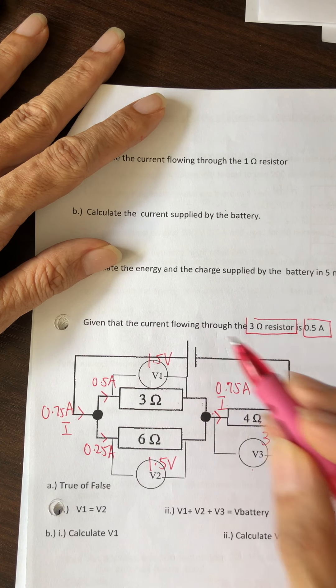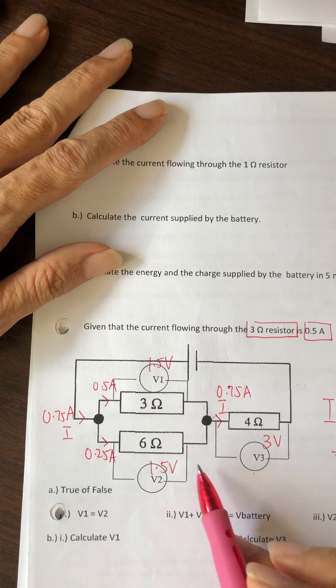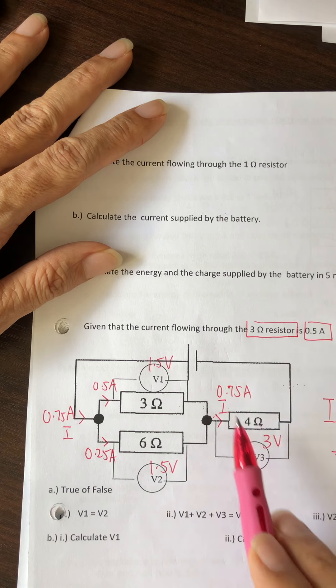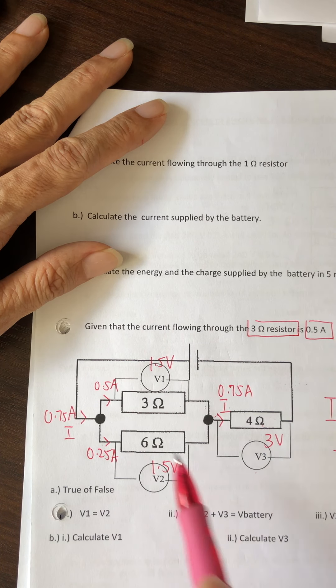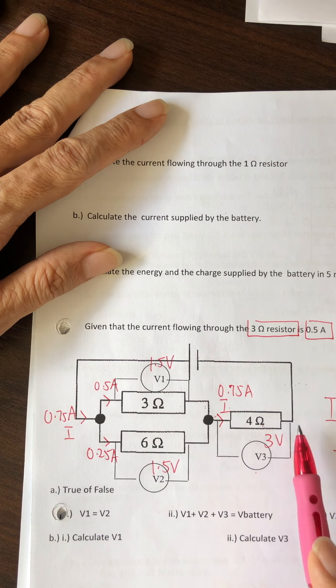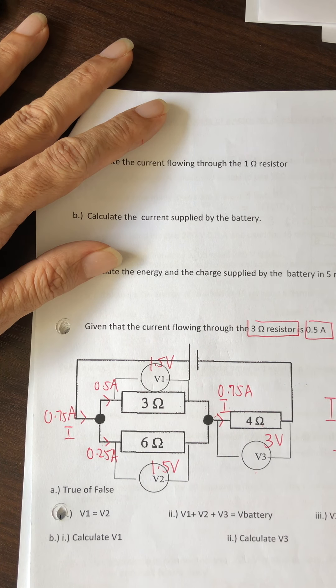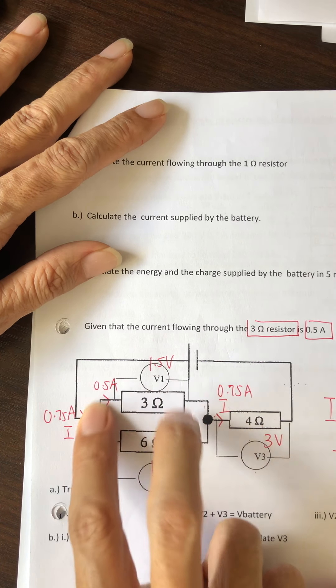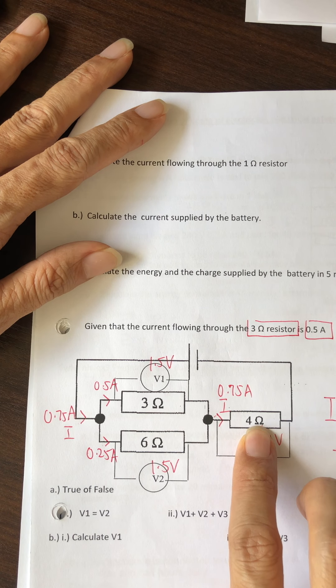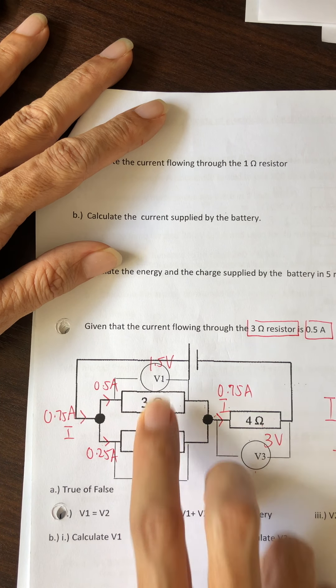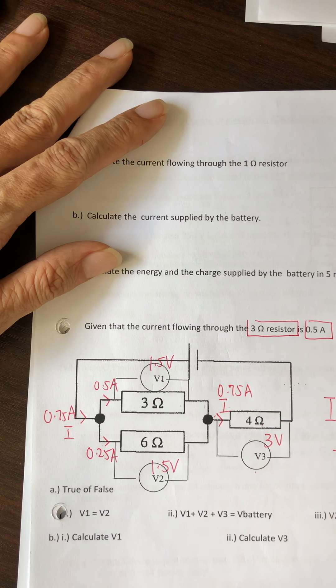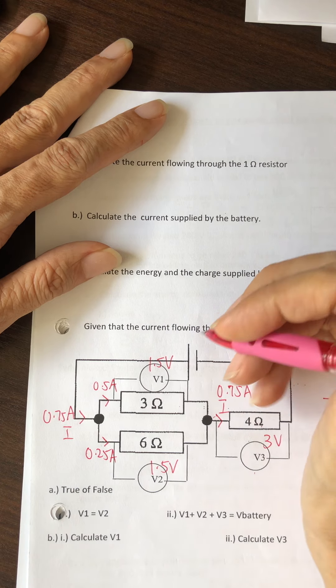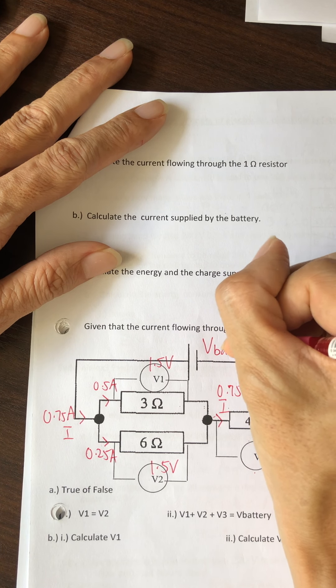You will get 0.75 times 4, which equals 3 volts. So here is 3 volts. Then if they ask you what is the voltage of the battery, the wrong answer is to say 1.5 plus 1.5 plus 3 equals 6. It's wrong because this is not purely series.